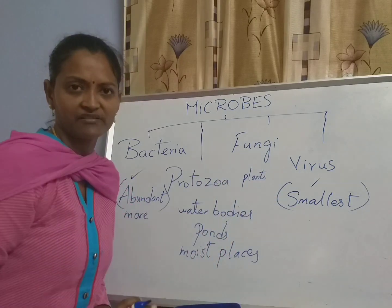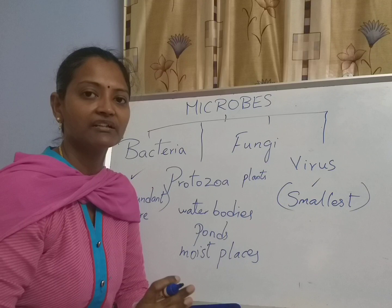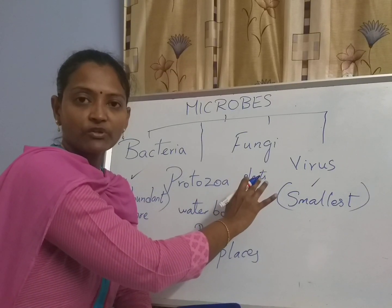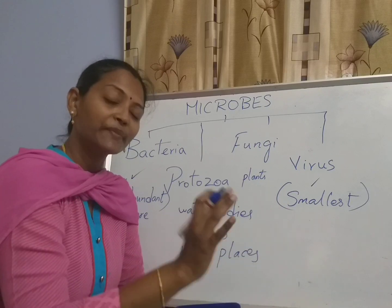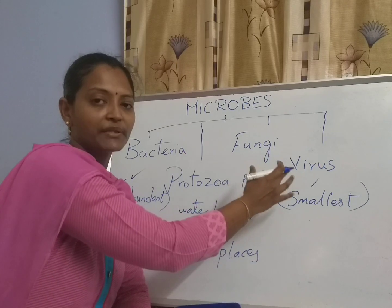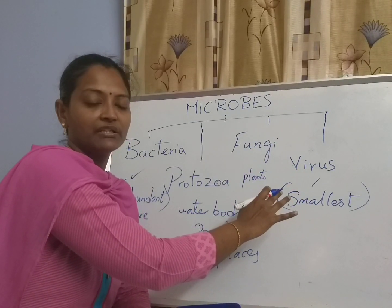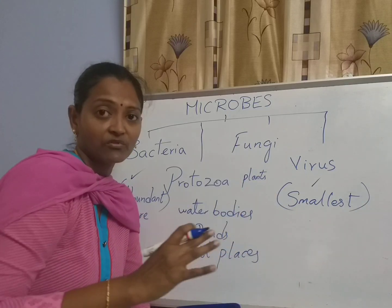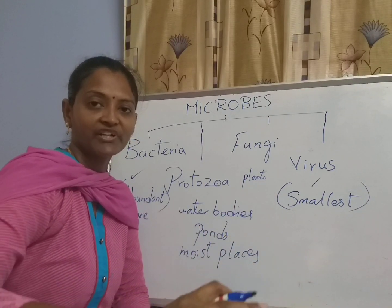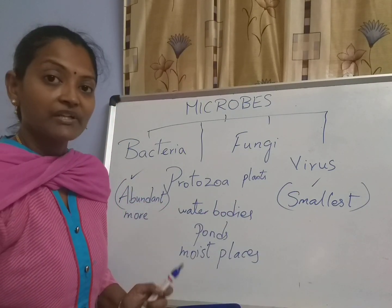Fungi depend on other organisms for food and they grow very well — very rapidly. Mushrooms, for example — have you seen mushrooms growing on a specific log of a tree? And also mold found on spoiled bread — those are one kind of fungi.